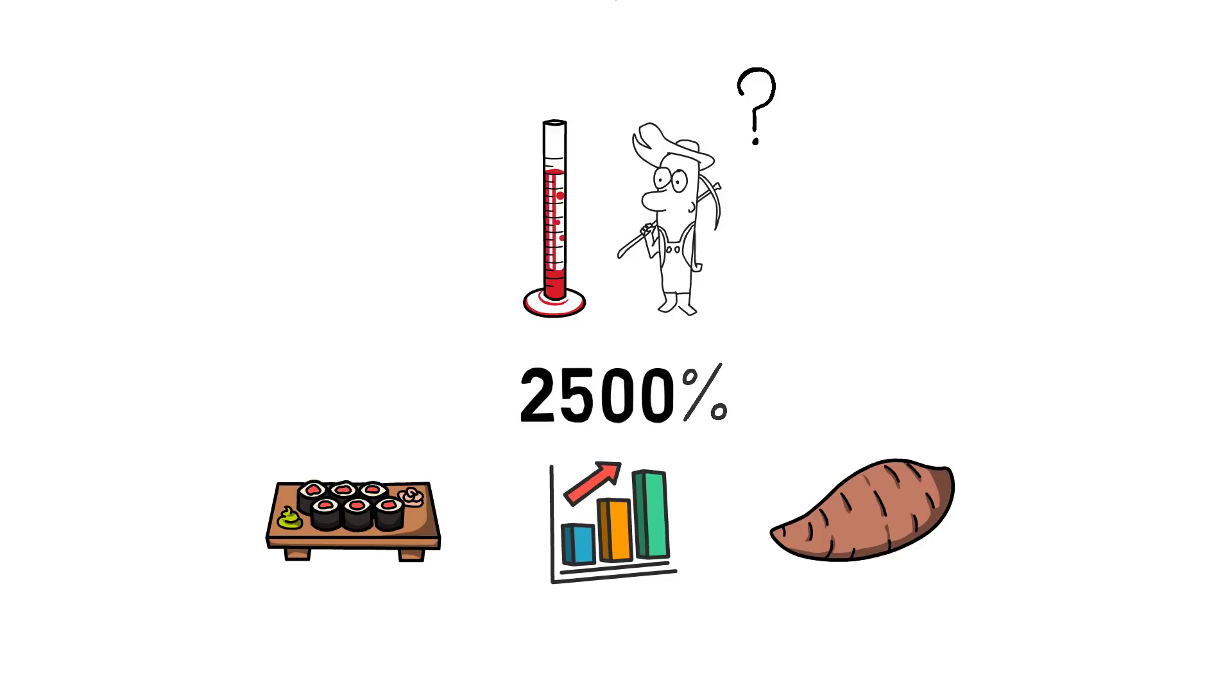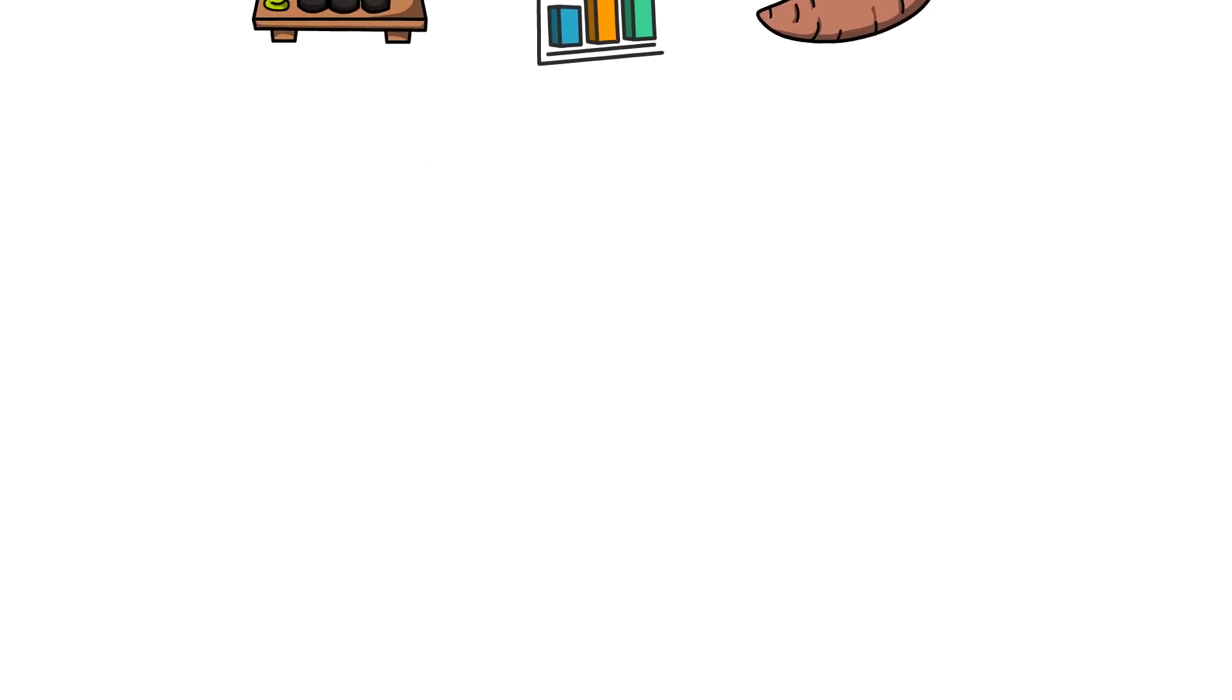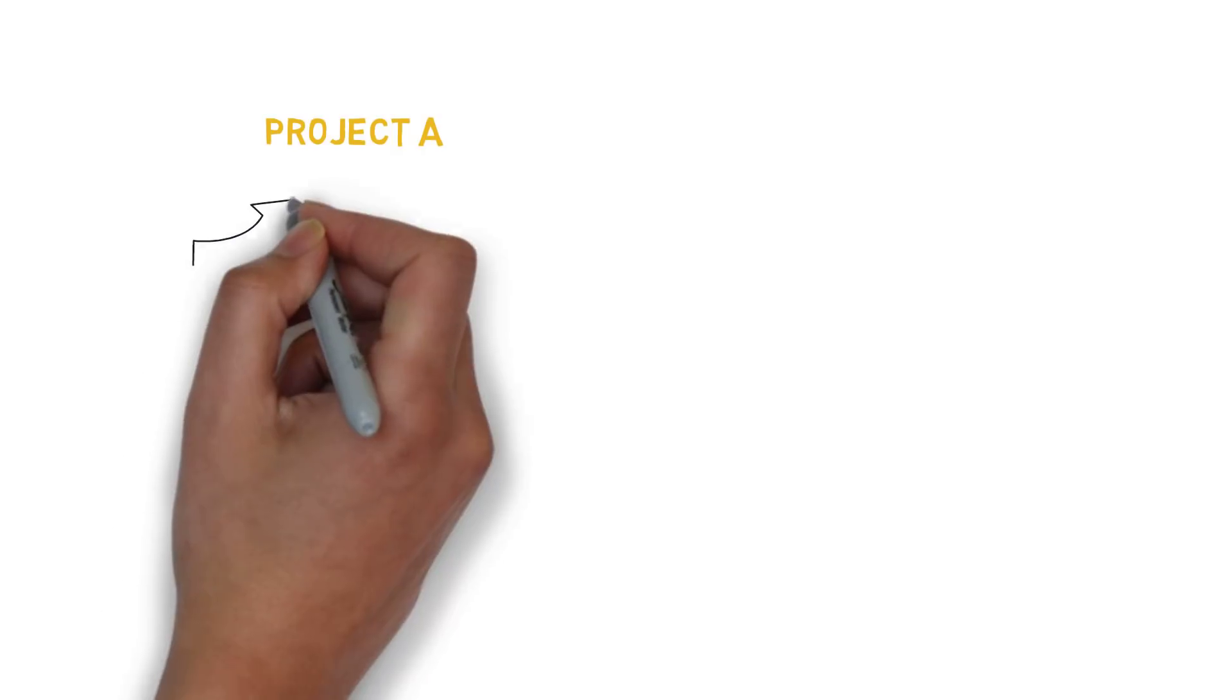To illustrate this, let's have a look at a quick example. Project A, a fork of another well-known project, creates a new token, Token A, and distributes it via liquidity mining.